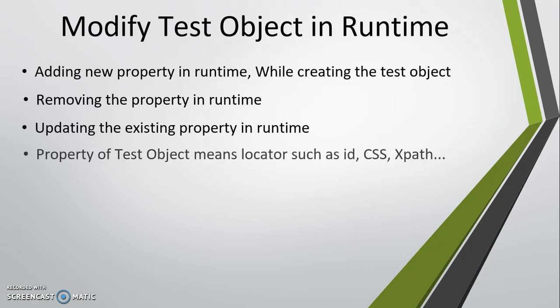As we know, test object is the terminology which Katalon Studio uses for a web element, and the property means the attribute which will be used to uniquely identify the test object. The attribute can be ID, CSS, XPath, or anything.